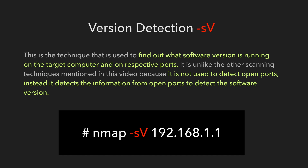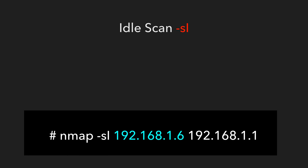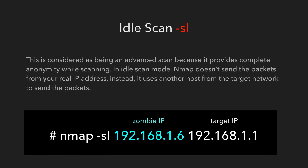IDLE Scan: this is considered an advanced scan because it provides complete anonymity while scanning. In IDLE scan mode, NMAP doesn't send packets from your real IP address. Instead, it uses another host from the target network to send the packets.